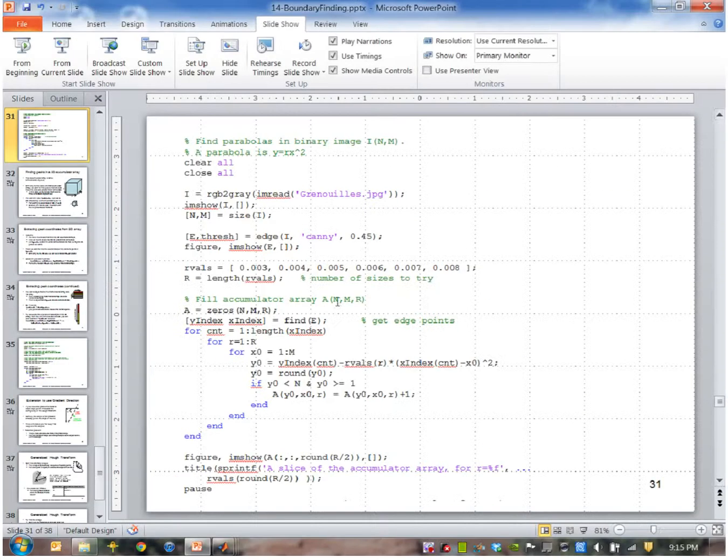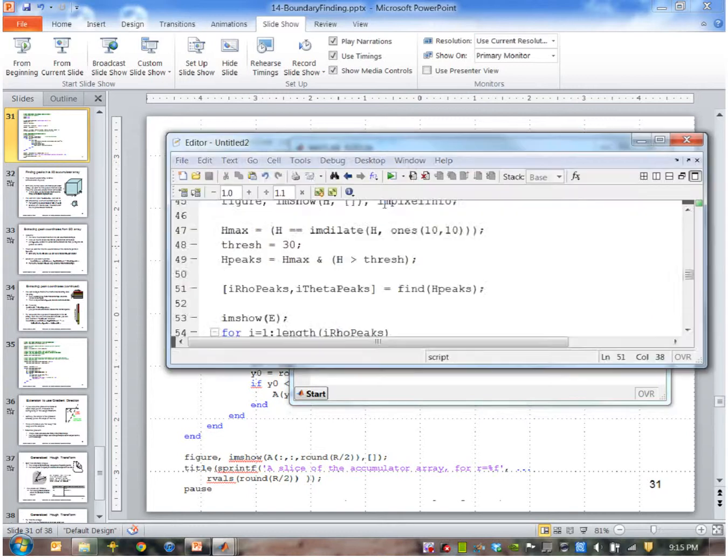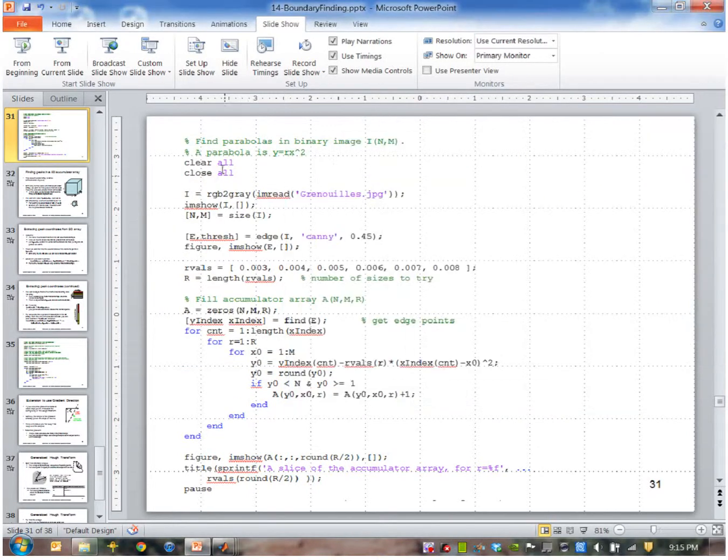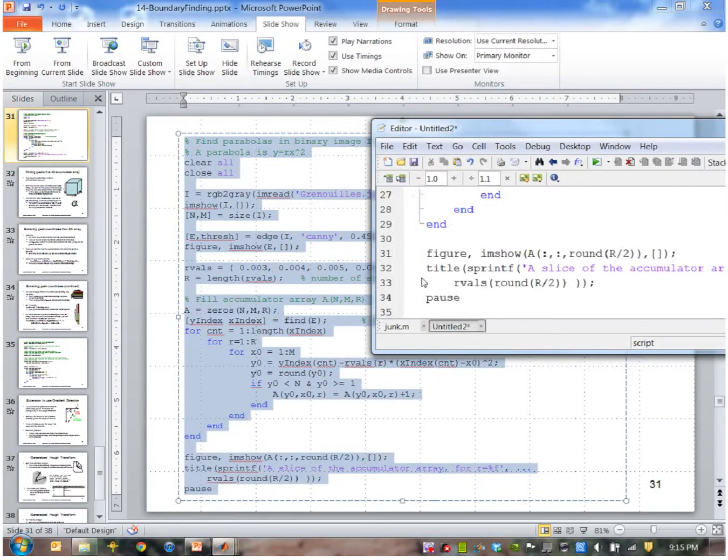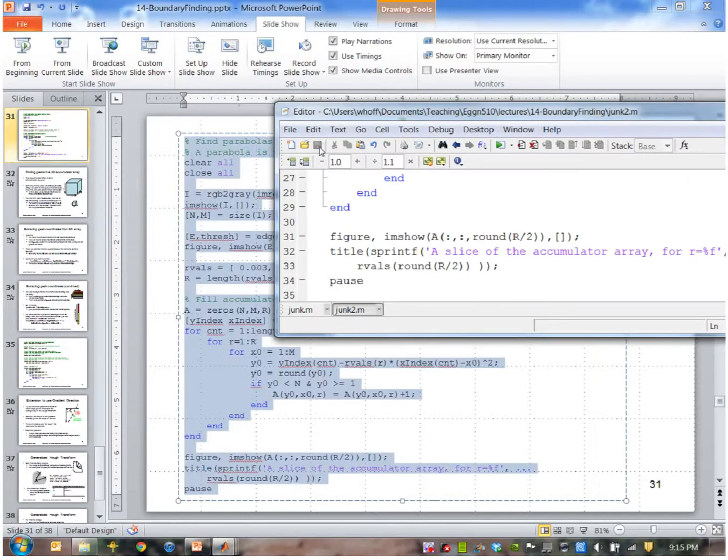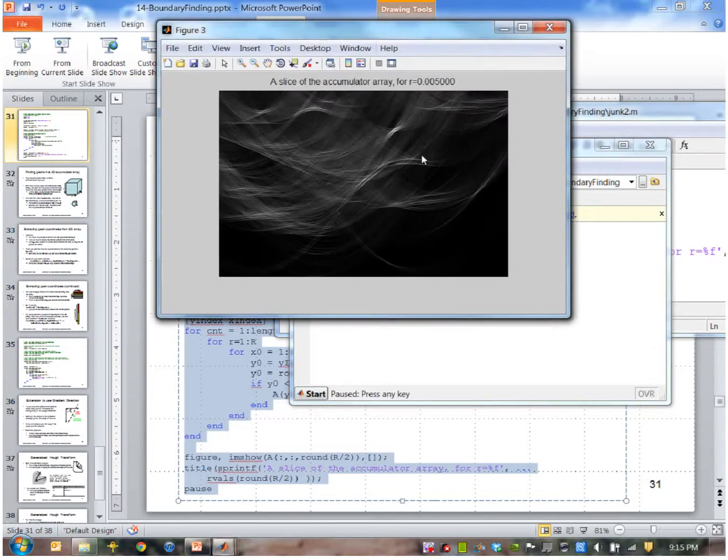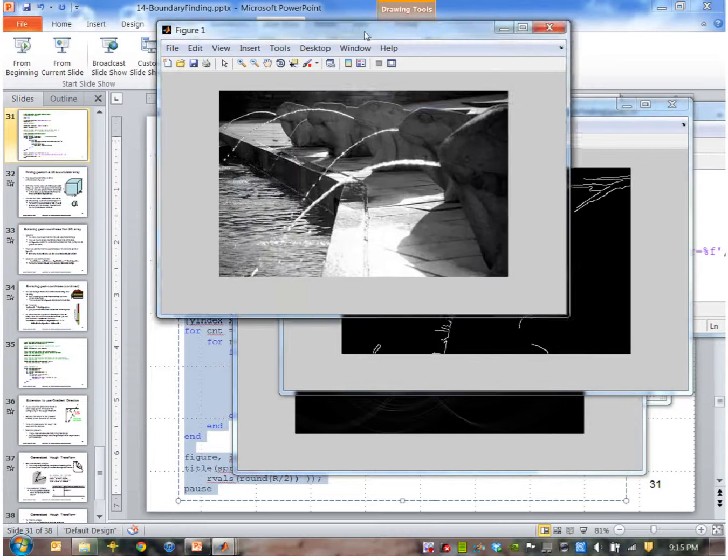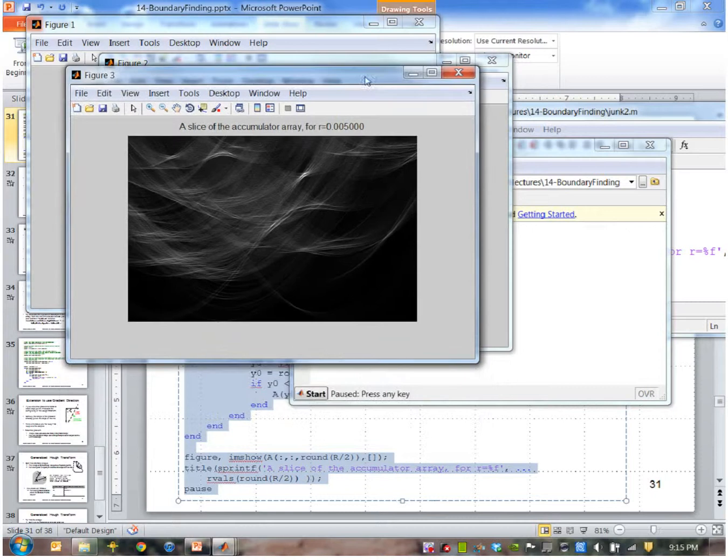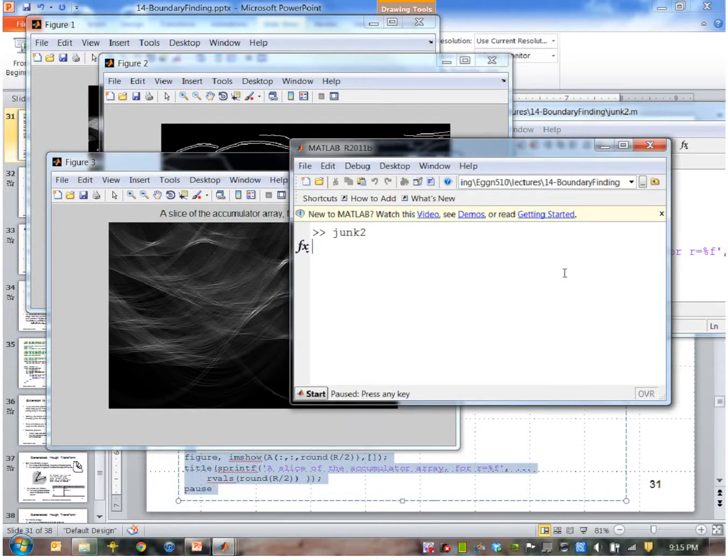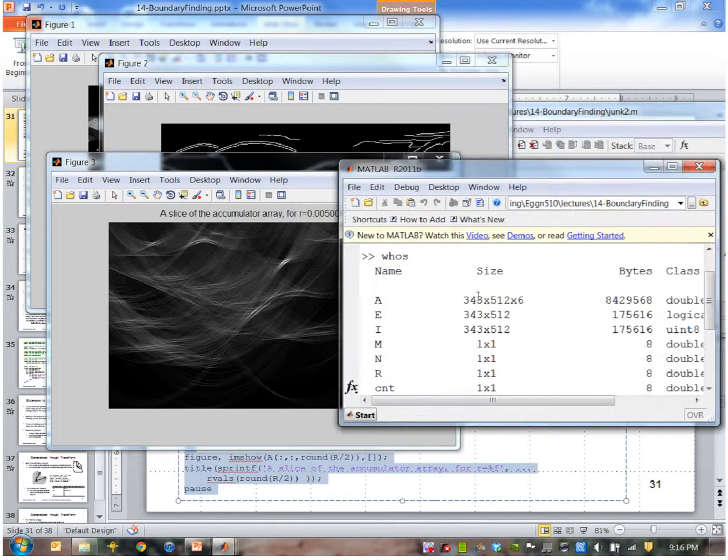So let me go ahead and do that. So I'll start a new function, just copy that code. Okay, so here is the original image. Here's the edge image. Here is one slice of the parameter array. Okay, so the parameter array again is three dimensional. It's size 343 by 512 by 6.